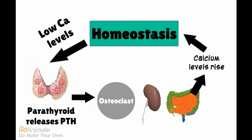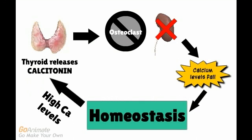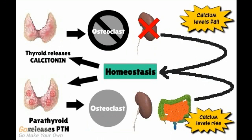Let's review blood calcium homeostasis. When calcium levels in the bloodstream are too low, the parathyroid gland releases PTH. PTH acts to activate osteoclasts and activates vitamin D, which works to increase the amount of calcium absorbed into the bloodstream through the kidneys and intestines — thus calcium levels rise. When calcium levels are too high, the thyroid gland produces calcitonin, which inhibits osteoclast activity and inhibits the reabsorption of calcium through the kidney — thus calcium levels fall. Here is a summary of how these two systems maintain blood calcium homeostasis.